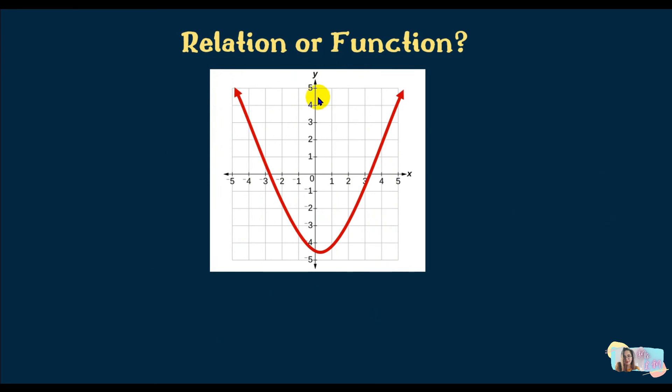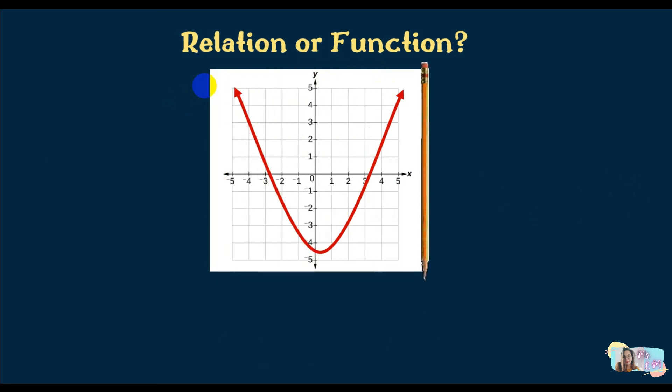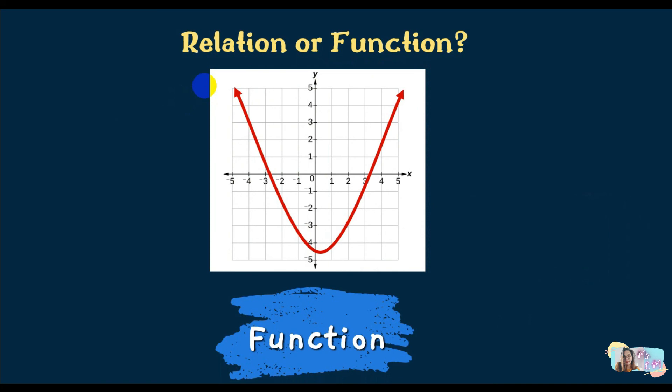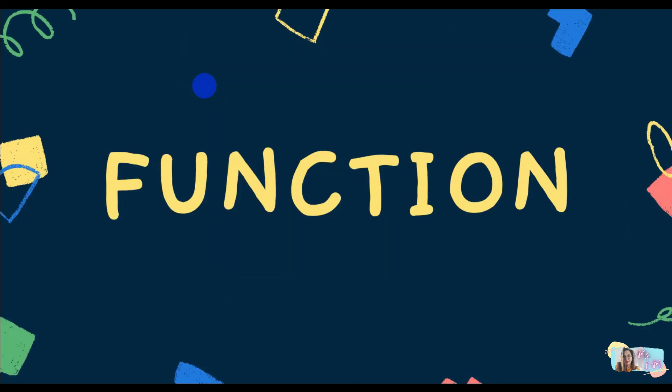This last example: applying the vertical line test, no two points are hit at the same time — so this is a function. To summarize: a function is a relation where no x value repeats. We can also use the vertical line test when the relation is given in graphical form.